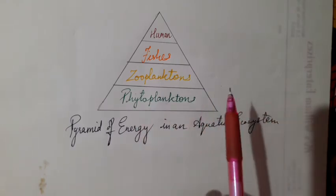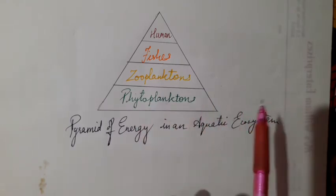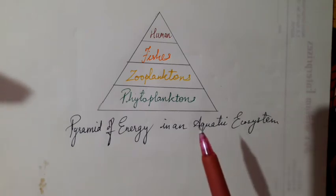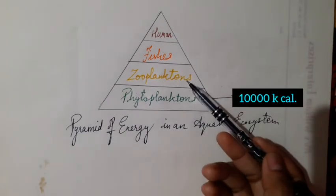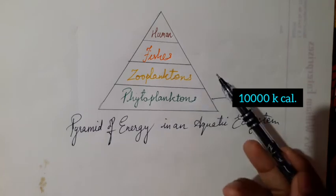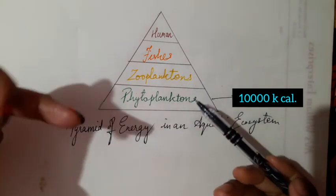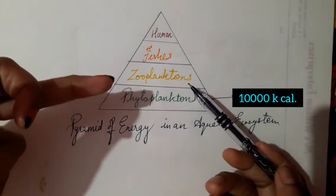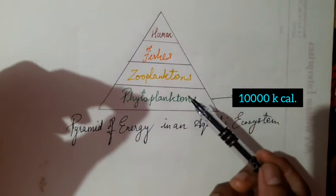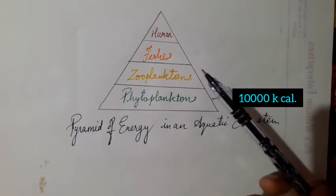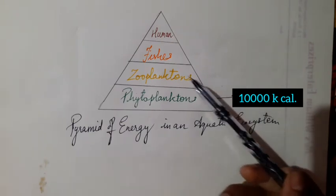Here the phytoplankton is nothing but an algae which is autotrophic, means they itself prepare their food. Now this phytoplankton is eaten by the zooplankton. Zooplankton are nothing but the heterotrophs. These heterotrophs eat the phytoplanktons. The zooplanktons are very small. These zooplankton are heterotrophic in nature, that means they cannot prepare their own food, therefore they rely on the phytoplankton.